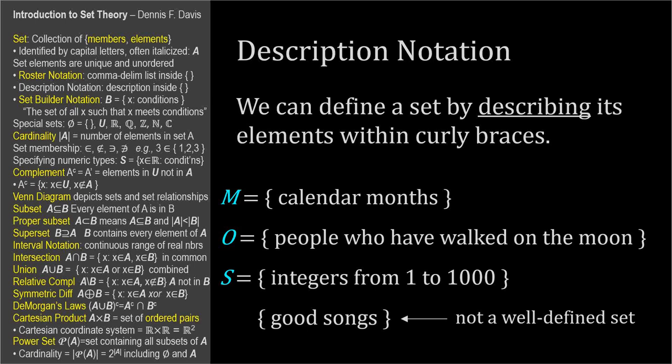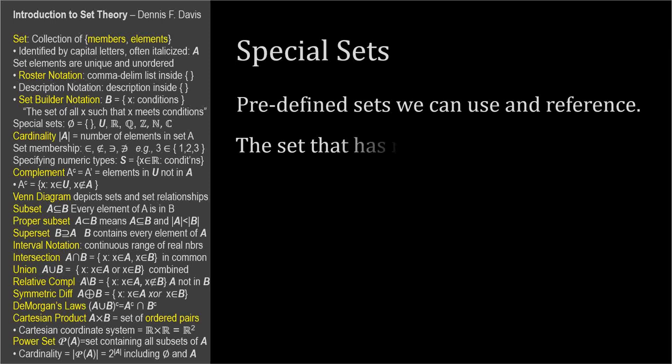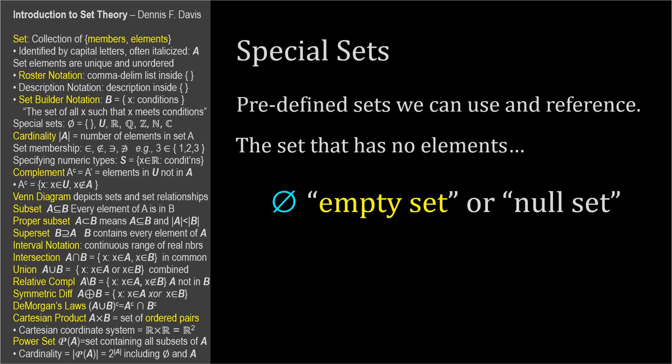There are several special, predefined sets we can use in reference. There's a special set that has no elements. It's denoted by a circle with a slash, and it's called the empty set, or null set. It can also be represented by a pair of curly braces with nothing between them. We'll mention the empty set a lot as we proceed.